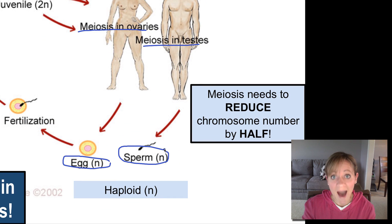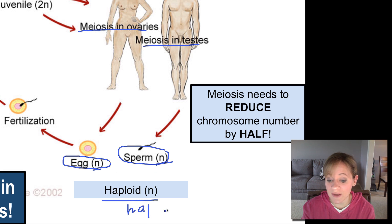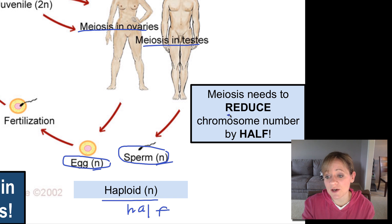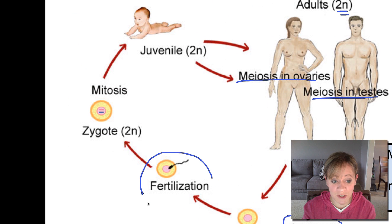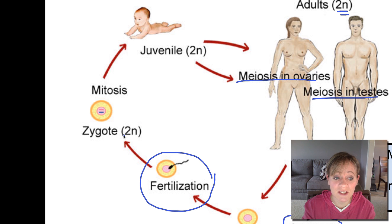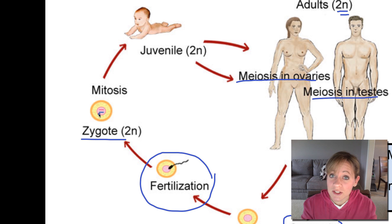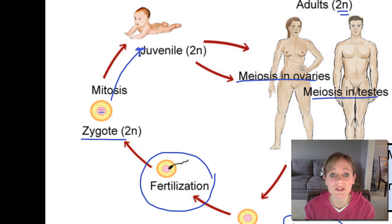The egg and the sperm have half as much DNA, so they are only N, and we call that haploid. Haploid means half as much DNA. Another purpose of meiosis is not only to create these sex cells, but to reduce the chromosome number — to reduce that amount of DNA by half. Now that we have the egg and the sperm, they can then fertilize one another. N plus N gives you 2N, so now you're back to the full set of DNA. This is called the zygote, which is simply a fertilized egg. The zygote then undergoes mitosis to grow into a baby and continues to undergo mitosis to grow into a human adult.